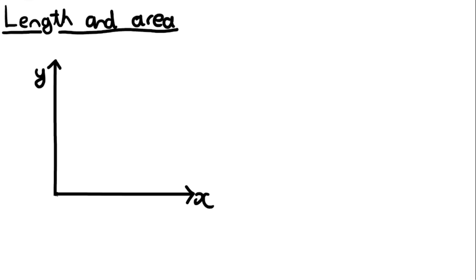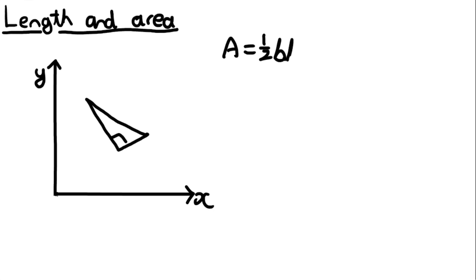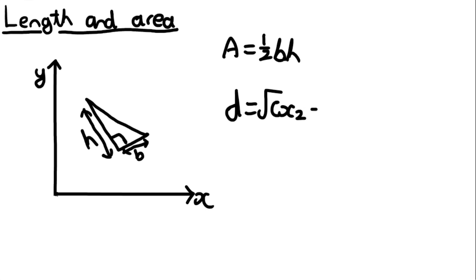Some quick notes on triangle questions: I've seen questions where instead of one side being on an axis, one of the sides of the triangle contains a right angle. This makes the problem easier too — the base is one side and the height is the perpendicular side. You can use the distance formula we covered earlier to find the lengths of both B and H.